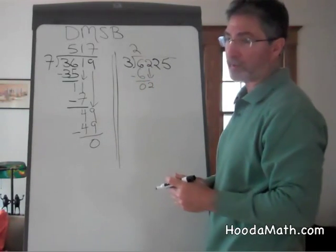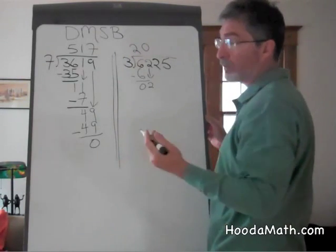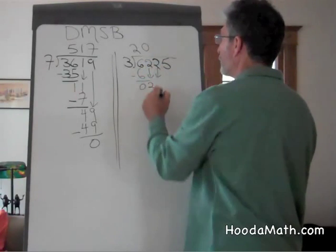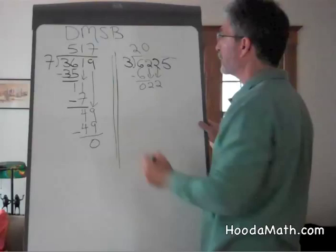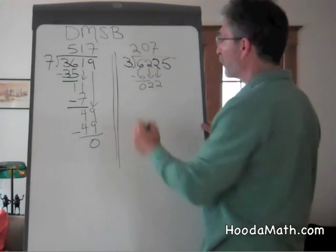3 is not a factor of 2. 3 goes into 2 only 0 times. So we bring down another number. 3 does divide into 22, 7 times. 7 times 3 is 21.